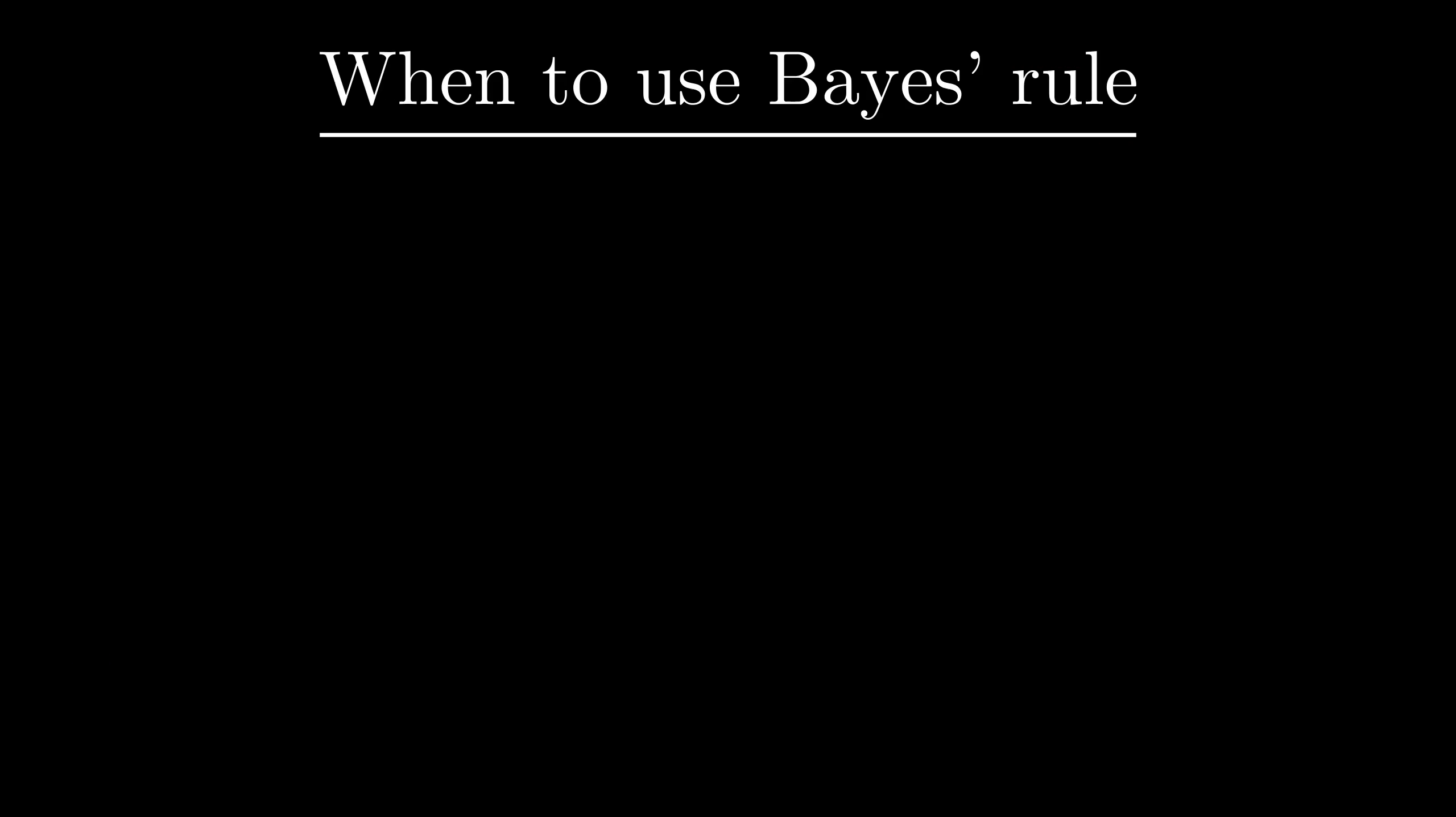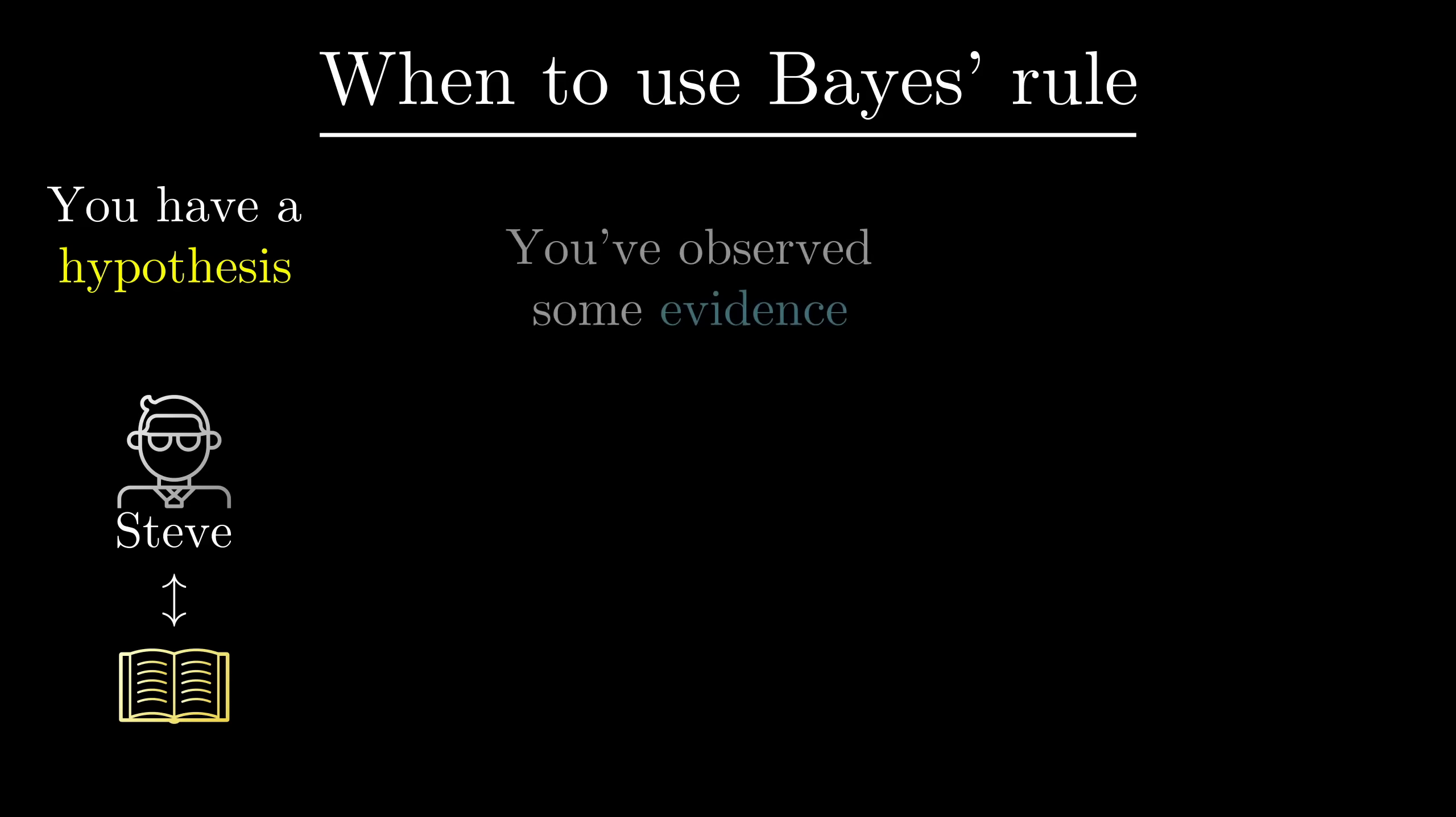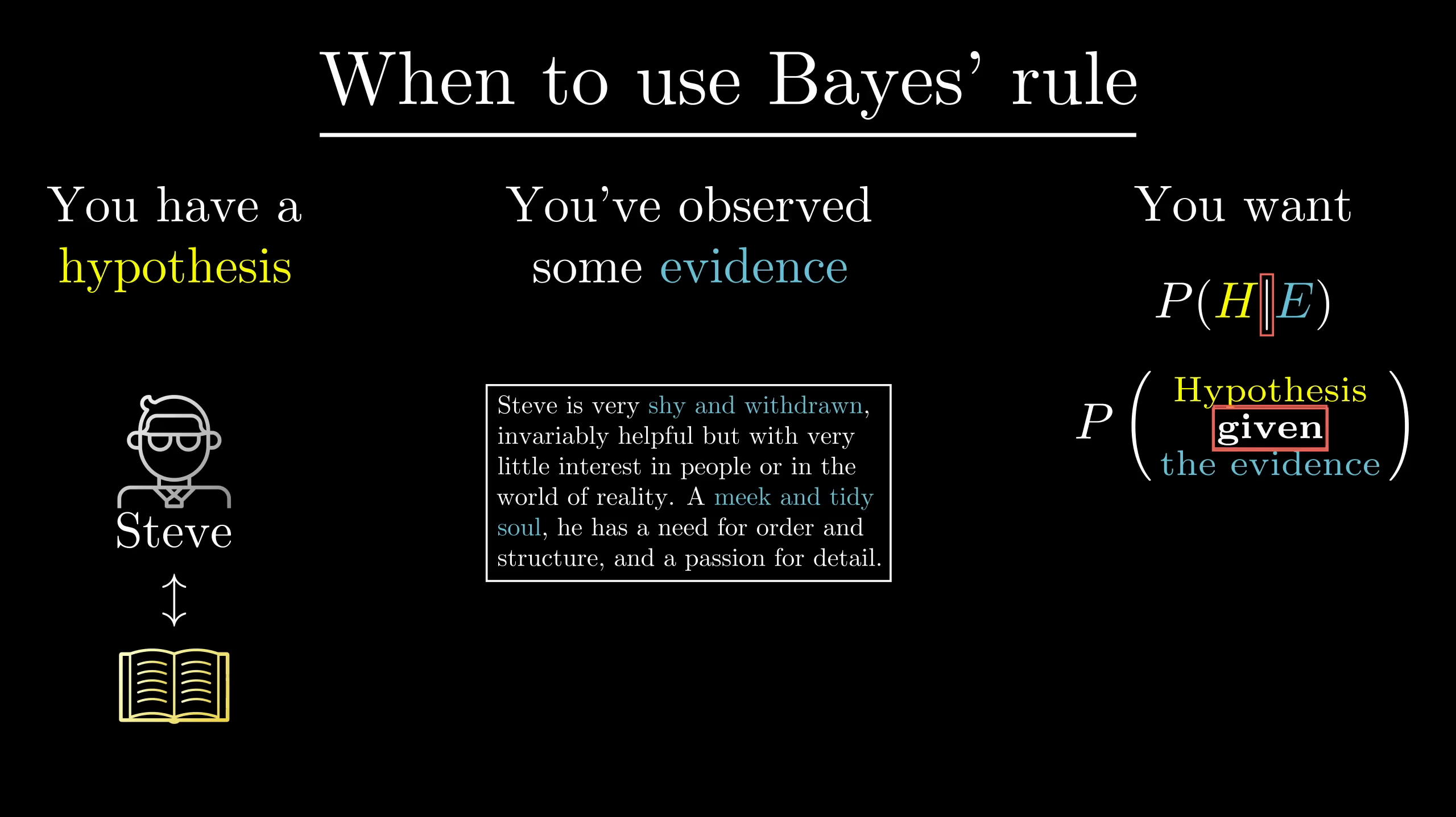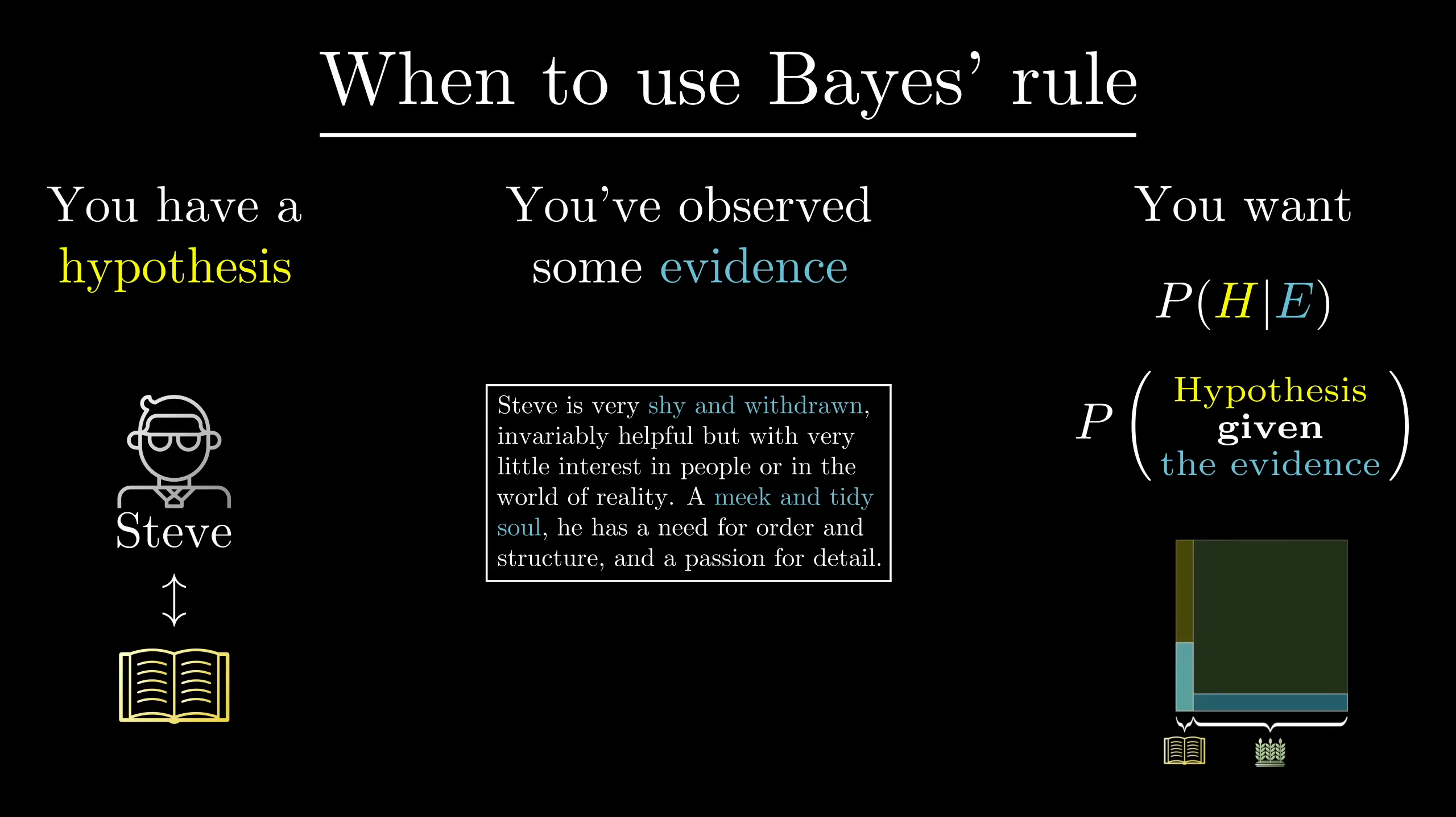The general situation where Bayes' theorem is relevant is when you have some hypothesis, like Steve is a librarian, and you see some new evidence, say this verbal description of Steve as a meek and tidy soul, and you want to know the probability that your hypothesis holds given that the evidence is true. In the standard notation, this vertical bar means given that, as in we're restricting our view only to the possibilities where the evidence holds.